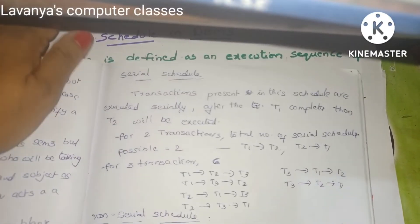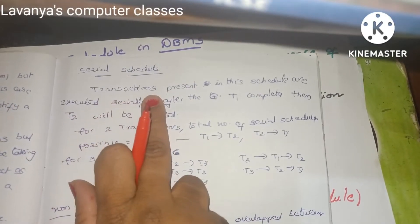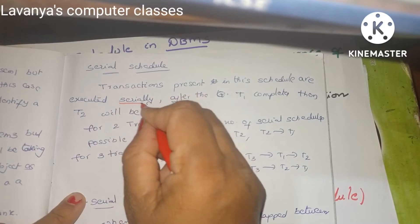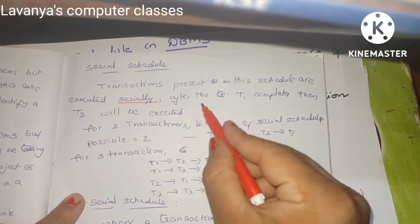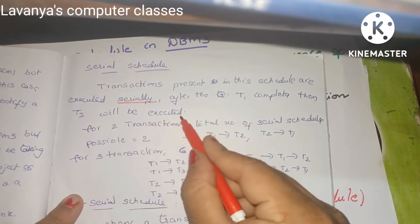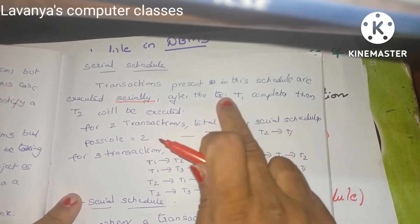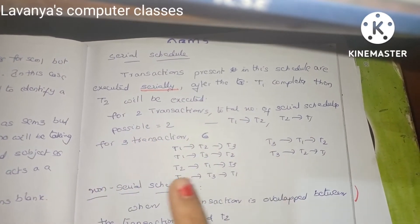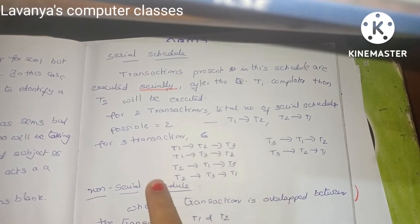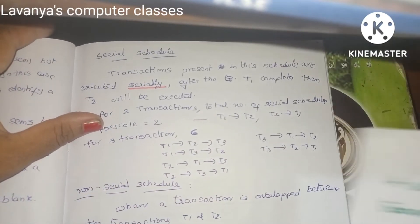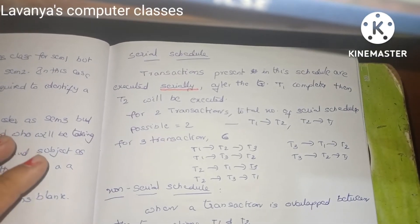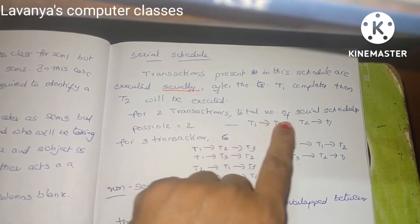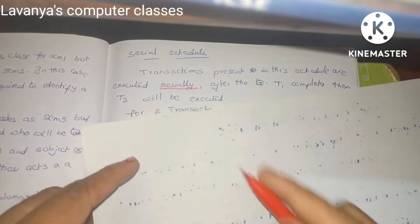In serial scheduling, transactions present in the schedule are executed serially — one after another. After T1 completes, then T2 will be executed. For example, if there are two transactions T1 and T2, either we start T1 then T2, or T2 then T1 — one after another only. For two transactions, the total number of possible serial schedules is factorial 2, which equals 2.